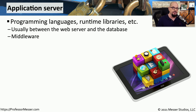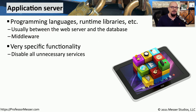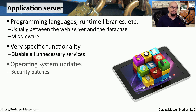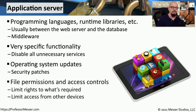Some of these systems will be running application server software, which might include programming languages or libraries required for these applications to operate. This is usually a layer of software that sits between the web server and the data itself — sometimes referred to as middleware. This type of server has a very specific function, so if there are capabilities outside the scope of this application server, we should make sure those capabilities are disabled. We want to be sure the application server is running the latest security patches and has the correct permissions, with limited access to the operating system.